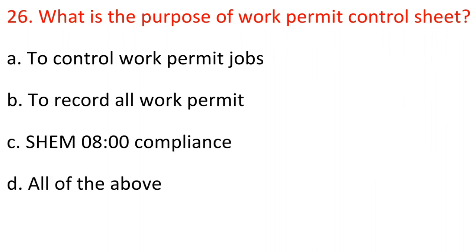Question 26: What is the purpose of the Work Permit Control Sheet? A. To control Work Permit jobs. B. To record all Work Permits. C. Shift 8 o'clock compliance. D. All of the above. Answer: D. All of the above.